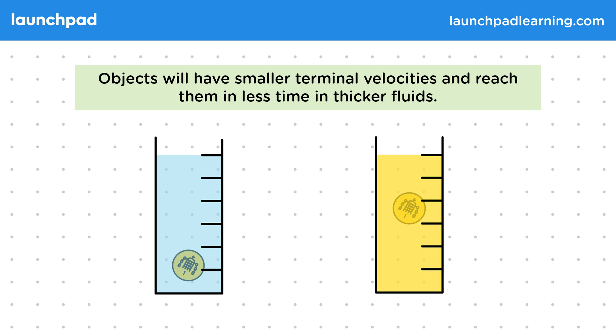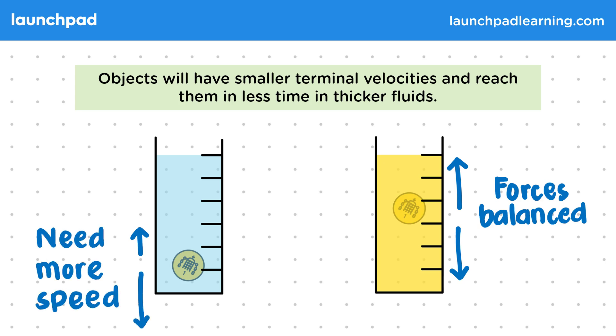Most importantly, the coin in the honey has travelled less distance and taken less time for the forces to become balanced. As the honey is thicker, the drag will match the weight at a slower speed than in the water. Here, the coin hasn't reached terminal velocity yet, as it needs more speed for the drag to balance the weight. So the main differences we observe is that the coin in the honey reaches terminal velocity before the coin in the water, and the terminal velocity is reached slower.